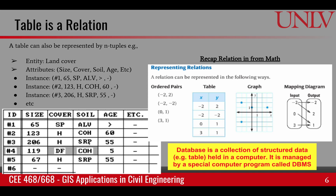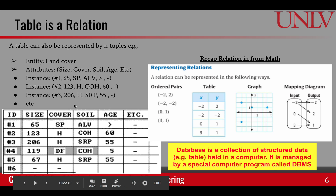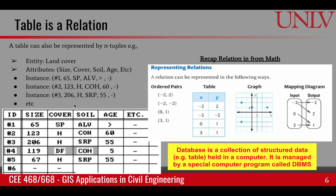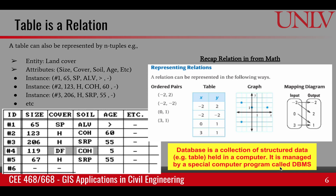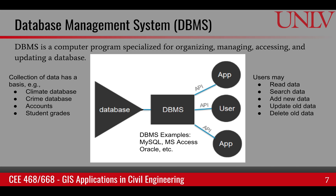When we talk about a database, we are talking about the representation of a relation in a computer system. A database is a collection of structured data held in a computer, and it is managed by a special computer program called a database management system. In a GIS system, we have attribute tables, but at the back end, a database management system is handling those attribute tables. A DBMS is a special computer program that helps us to organize, manage, access, and update a database.